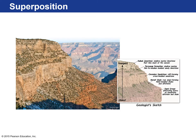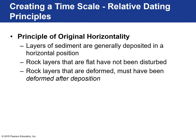At the Grand Canyon, standing on a ledge at the top, those are the youngest rocks. As you go down the sedimentary column, they get progressively older — oldest rocks at the bottom, youngest rocks on top. The next principle is the principle of original horizontality.